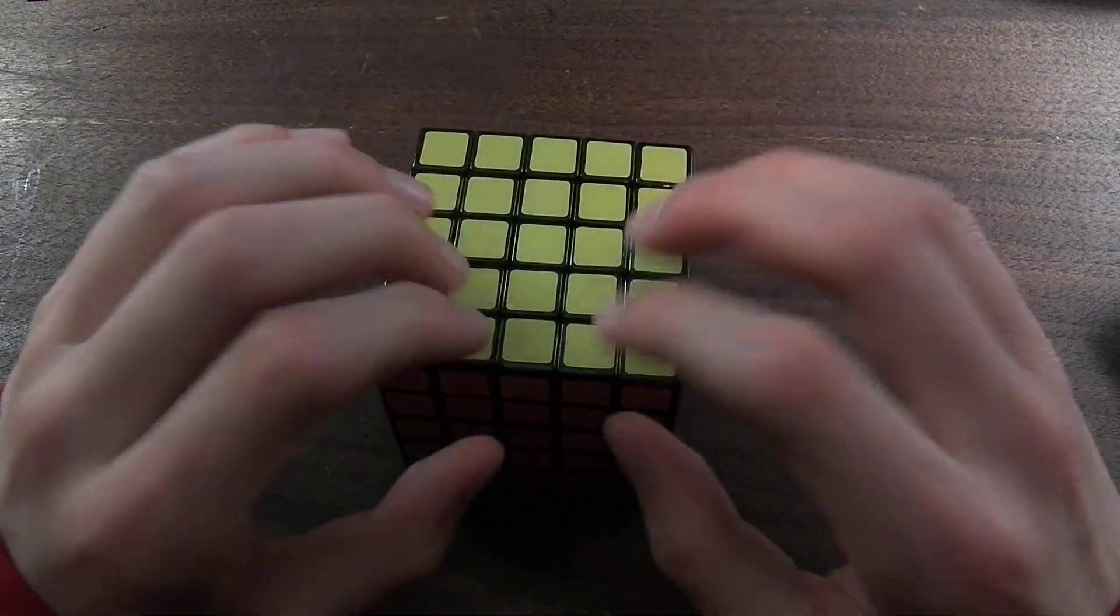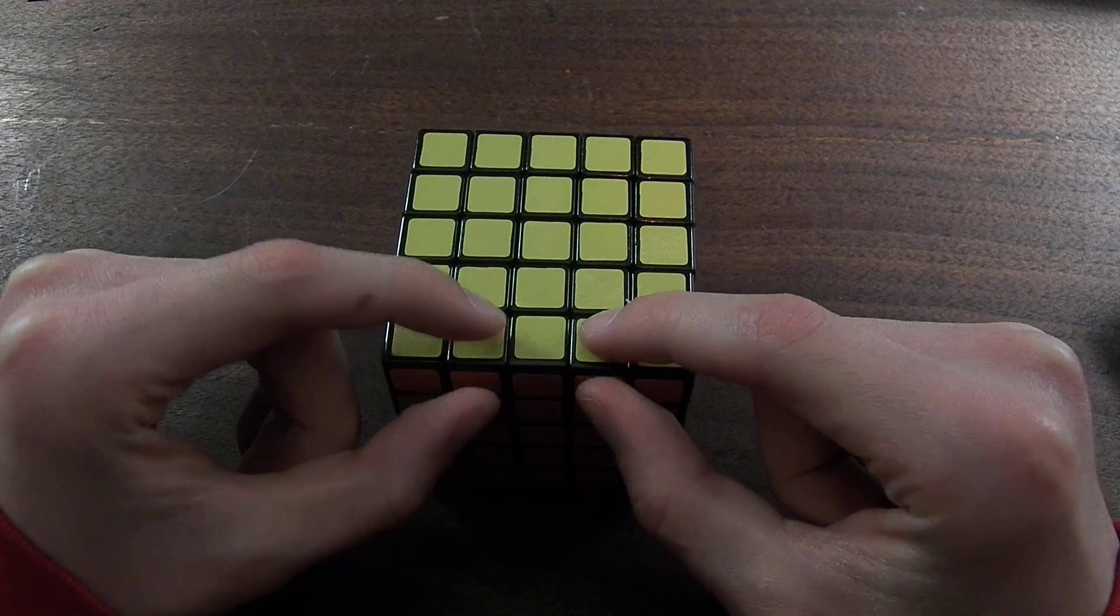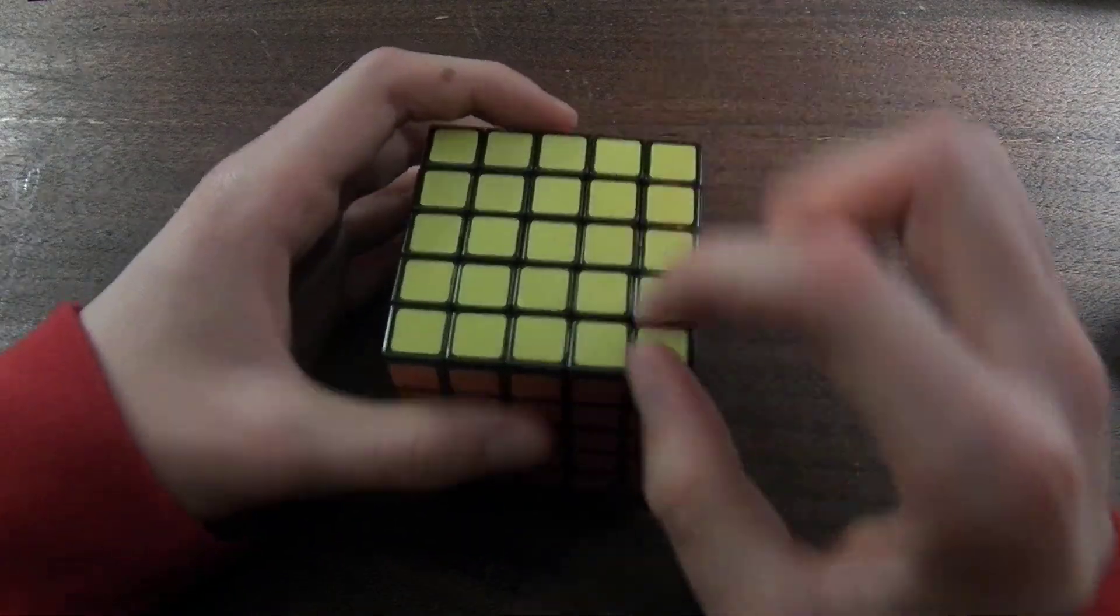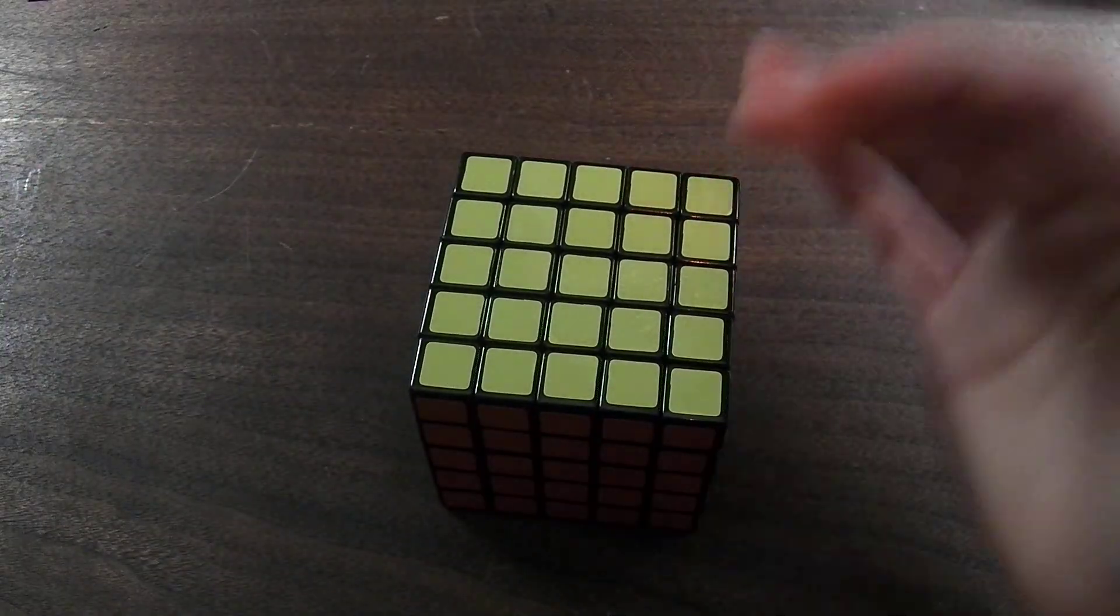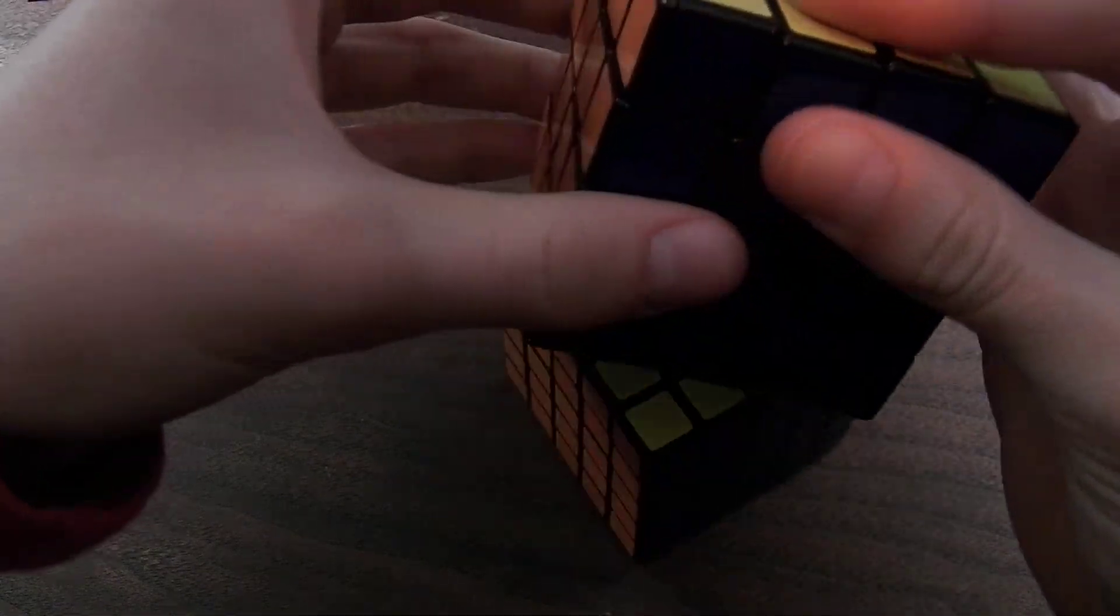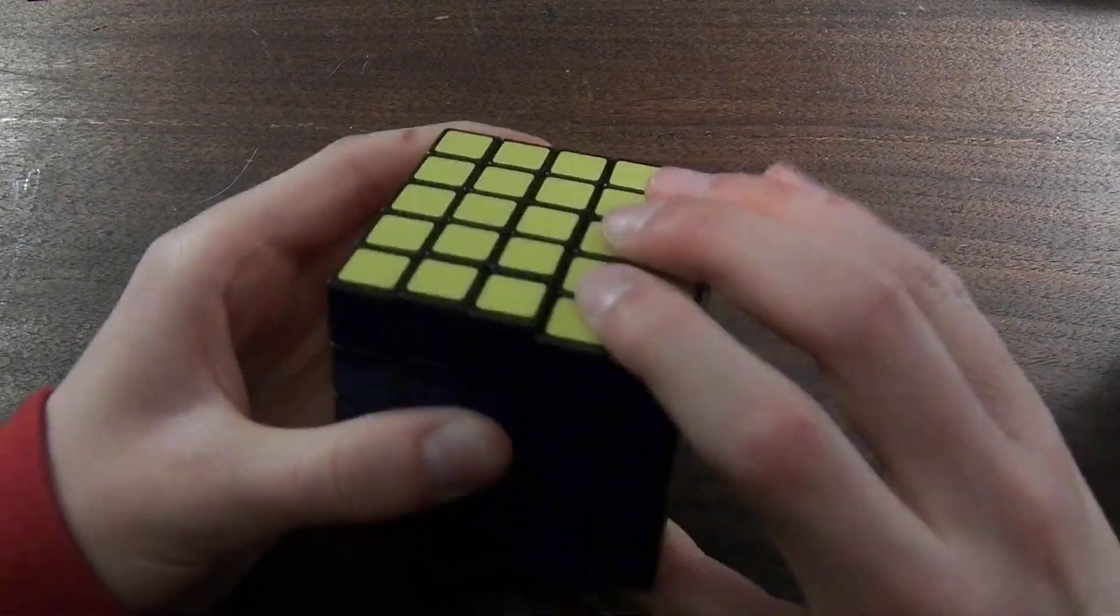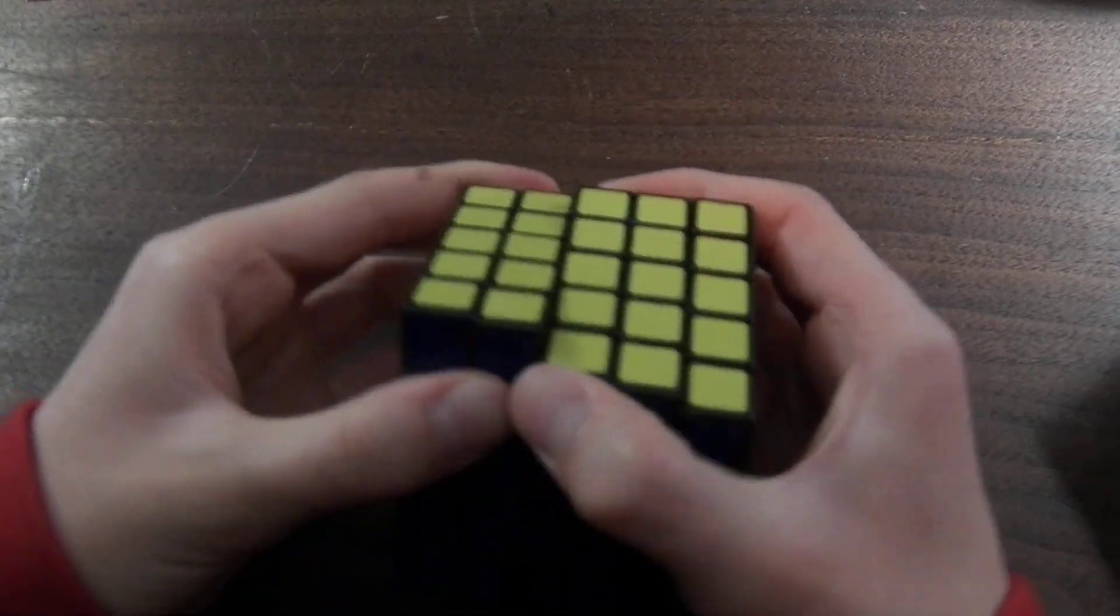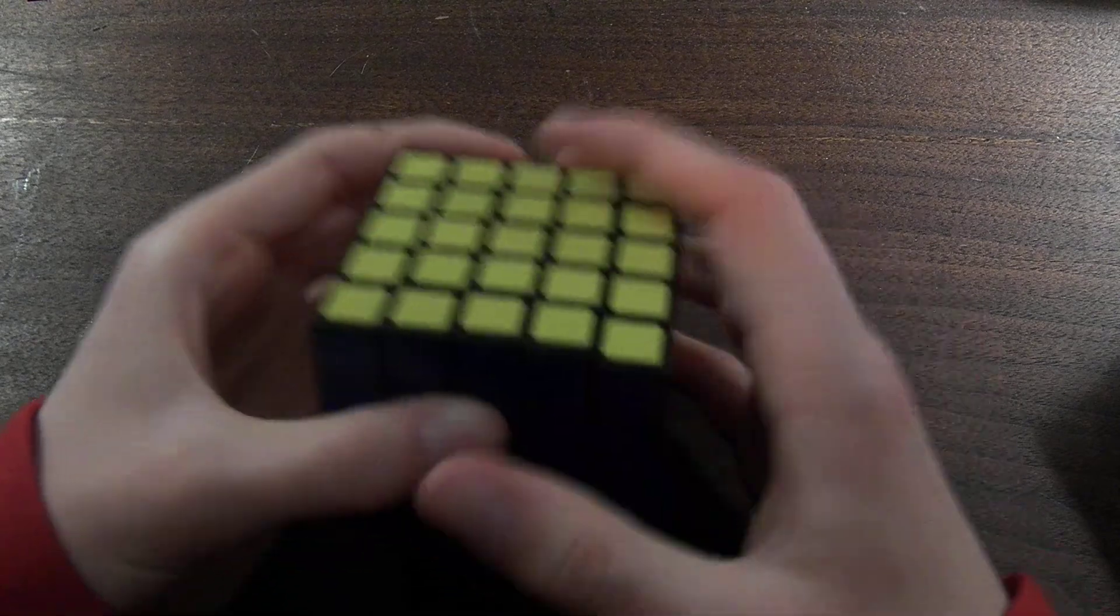For 5x5, there's only one case of parity where these two edges are flipped, kind of like that first edge parity I showed you, except that the middle one isn't. For this algorithm, it is basically the same one as the first one I showed you on the 4x4, the one where the edge was flipped, except that these two layers are right now, not just this layer, and these two layers are L, not just this layer.